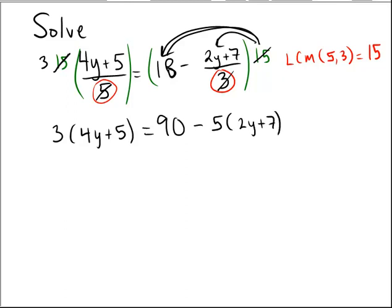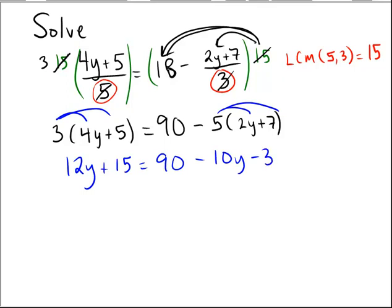This clears the denominators nicely and means we can now treat this as a more straightforward linear equation. The next stage would be to distribute wherever appropriate, so you get 12y plus 15 equals 90 minus 10y minus 35.